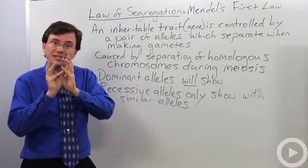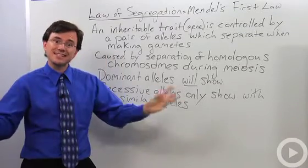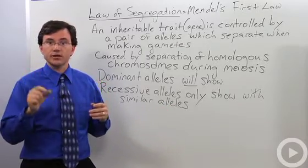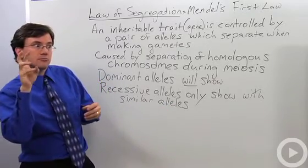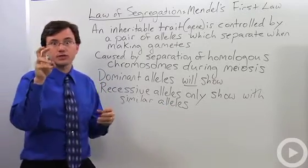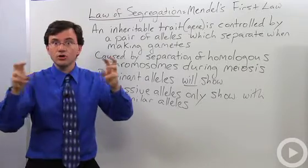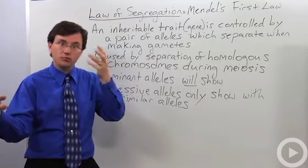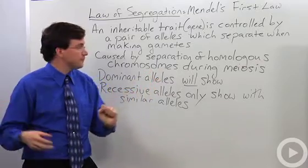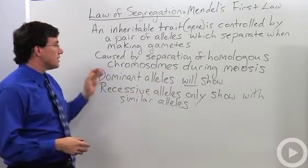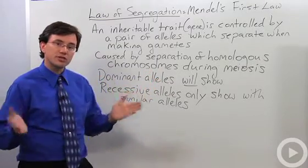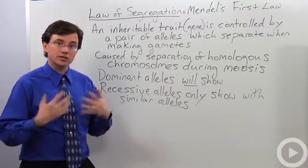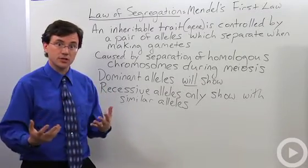For example, if you have a dominant version of an allele and a recessive version, one of your gametes will contain the dominant one and the other will contain the recessive one. This separation is caused by the separation of homologous chromosomes during the process of gamete formation called meiosis.